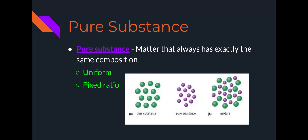So first, pure substance. A pure substance is matter that always has exactly the same composition. It's going to have a uniform composition and a fixed ratio. There are two types of pure substances, elements and compounds.